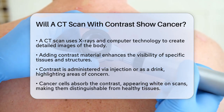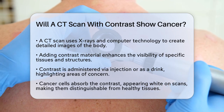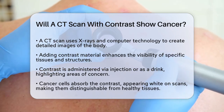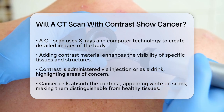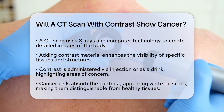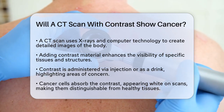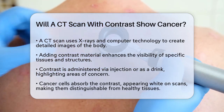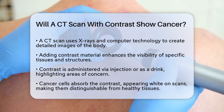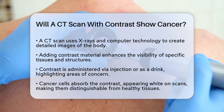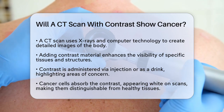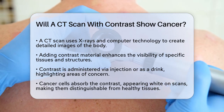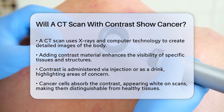A CT scan, or computed tomography scan, uses x-rays and a computer to create detailed pictures of the inside of your body. When contrast material is added, it significantly enhances the visibility of certain tissues and structures. The contrast material is usually given through an injection into a vein or as a drink, and this dye highlights specific areas inside the body.